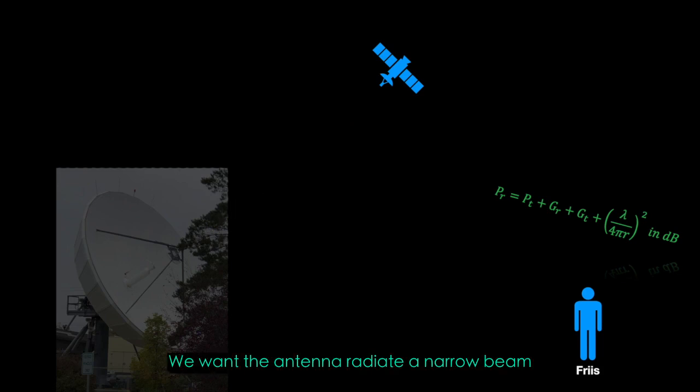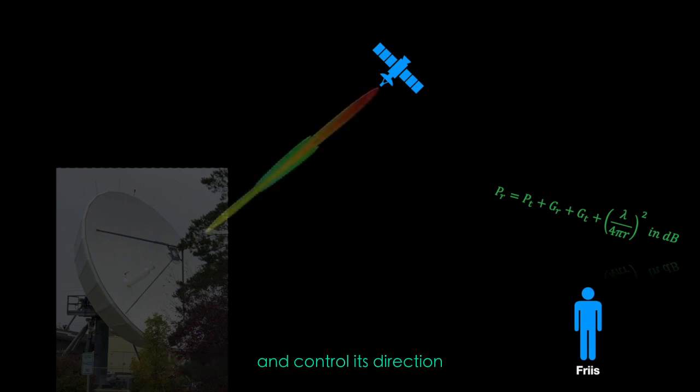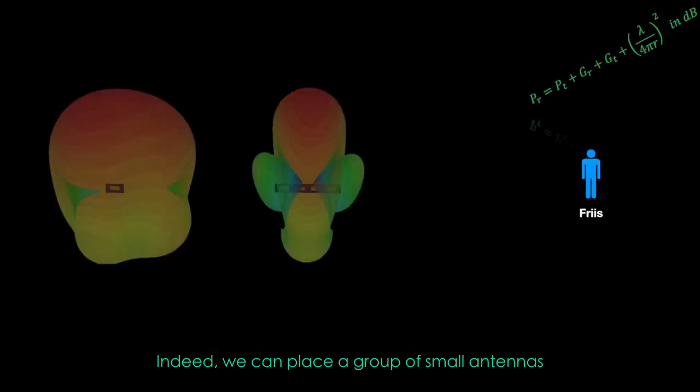We want the antenna to radiate a narrow beam and control its direction by simple method, just using low profile gears. Indeed, we can place a group of small antennas close to each other. The signals radiated from radiation elements can constructively or destructively combine with each other, so we will have a very narrow beam in one specific direction. Each element could radiate a wide beam because the signals cancel each other in other directions.